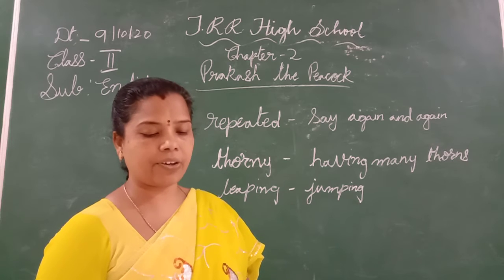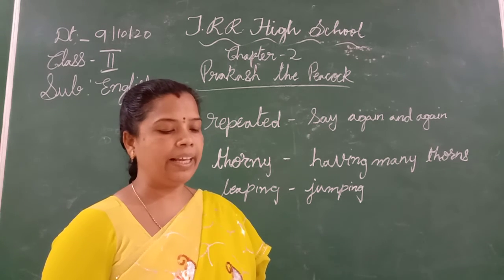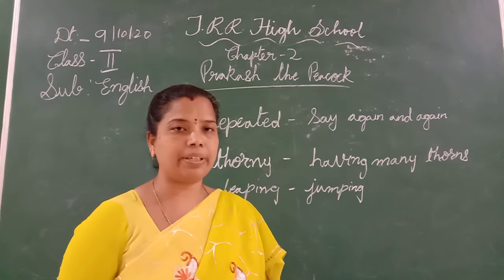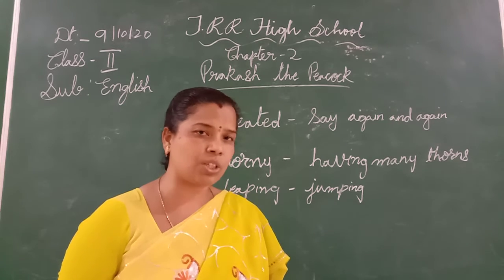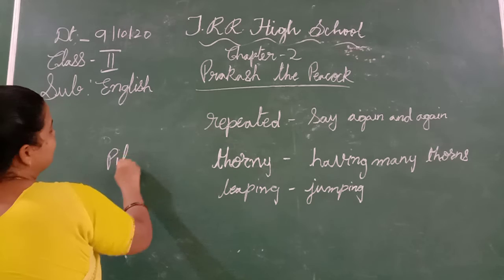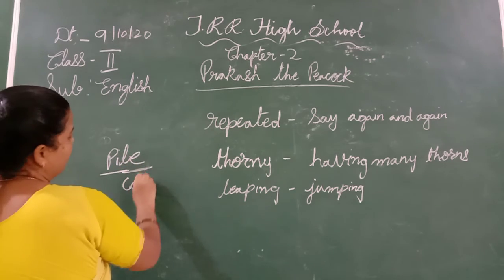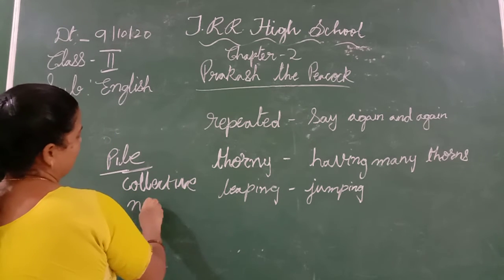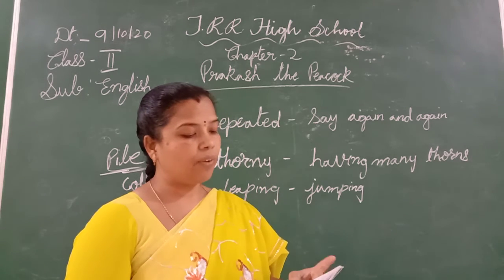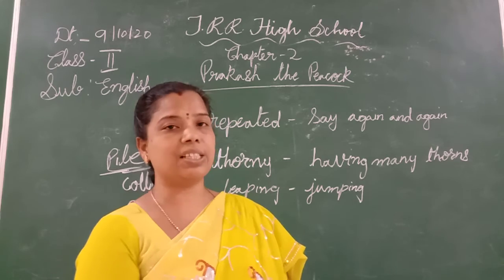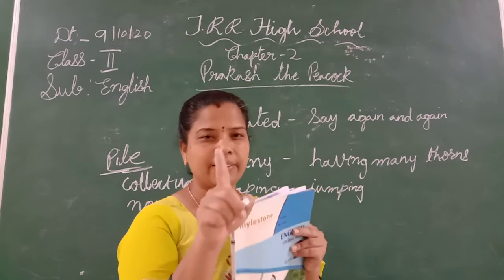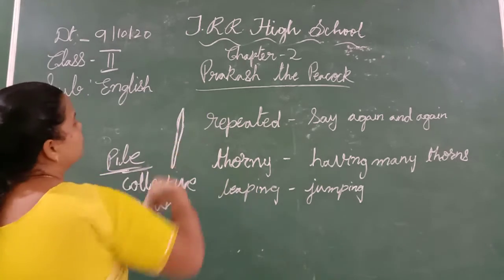'Ouch, ouch!' shouted Prakash as he crashed onto a pile of thorny twigs while taking the twist and leap. 'Ouch' is the expression you use when you get hurt or fall. Pile means a lump sum — it is a collective noun — a group of thorns. Twigs means small, thin dried sticks from plants.